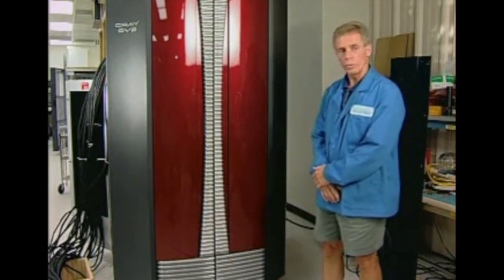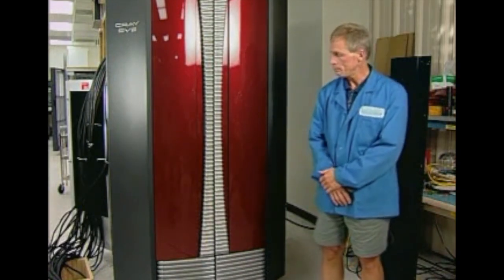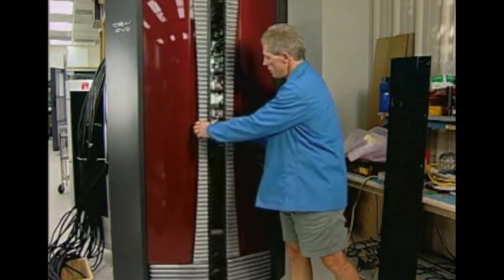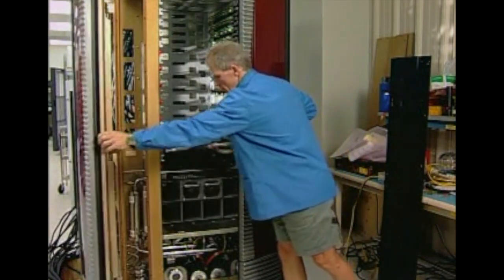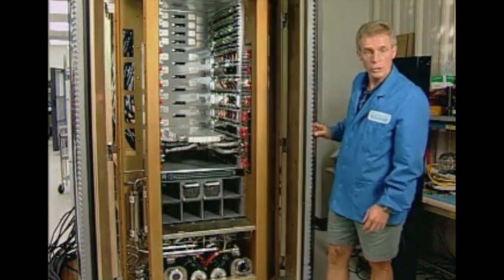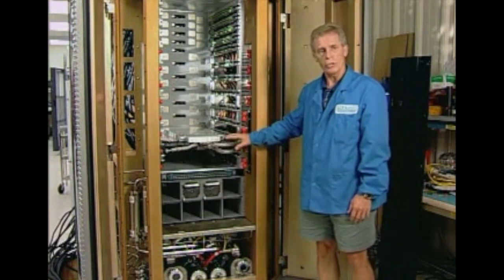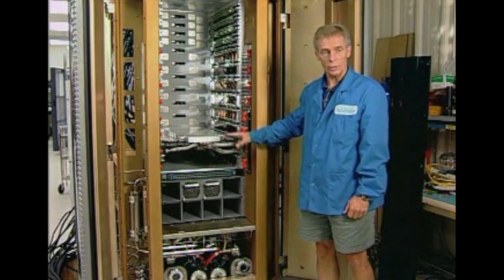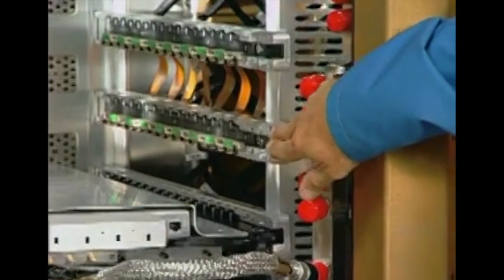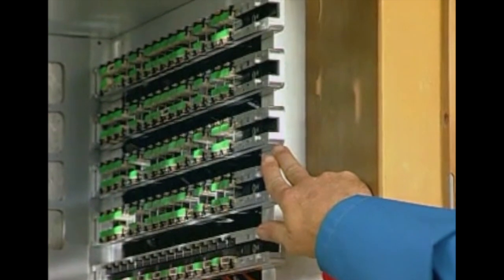This is the SV2 liquid-cooled chassis. What differentiates this from the air-cooled chassis is that all the heat that's generated internally gets dissipated to facility water. There are eight node modules and four router modules in this half of the chassis. It's symmetrical about the center plane, so there's another card cage on the opposite side of this mainframe. We call this the V-half, and the other half is called the W-half.